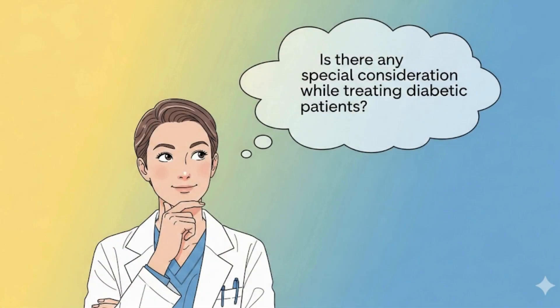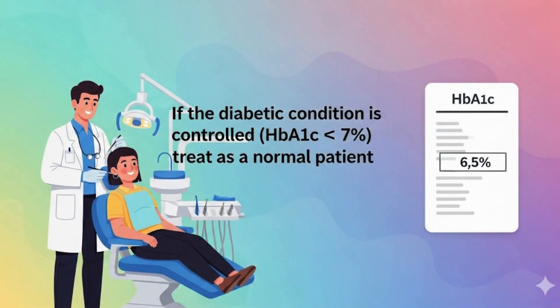Is there any special consideration while treating diabetic patients? Generally, if the diabetic condition of the patient is controlled — which means below 7% on the glycated hemoglobin test, HbA1c — you can treat him as a normal patient for most dental procedures. Diabetic patients can undergo extraction and oral surgeries if the percentage of glycated hemoglobin is below 7–8% in most references.